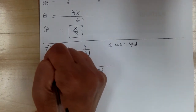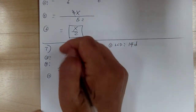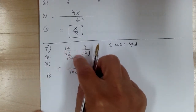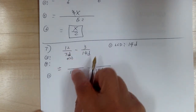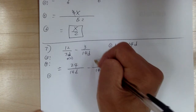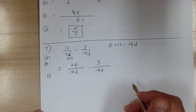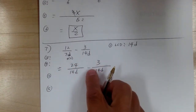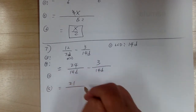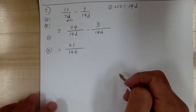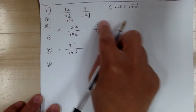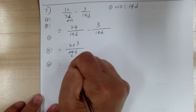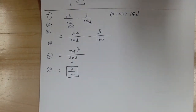Step three and four: from 7d to 14d, you need to multiply by two. The bottom is 7d times two giving 14d; the top, twelve times two gives twenty-four. The second fraction stays the same. So twenty-four minus three gives twenty-one over 14d. Step six: simplify by dividing by seven. You get three over 2d. That's it for number seven.